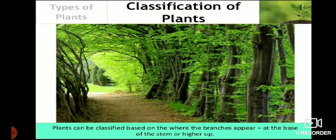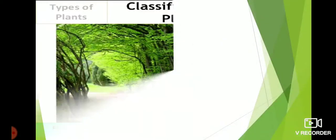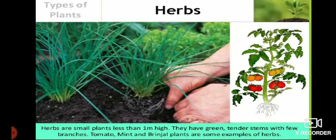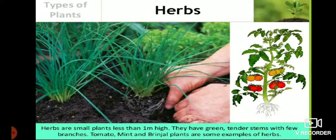So based on these three points, we can classify plants into five types. Herbs are small plants less than one meter high. They have green, tender stems with a few branches. Tomato, mint, and brinjal are some examples of herbs.